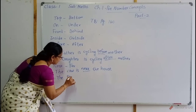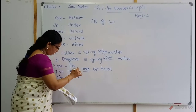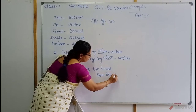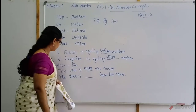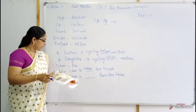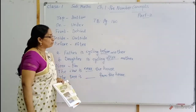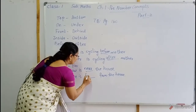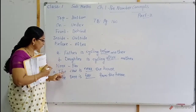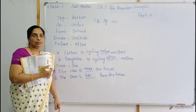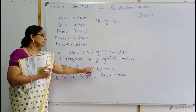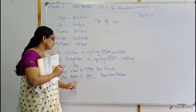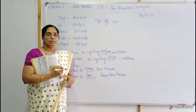Second one: the tree is — dash — from the house. According to the picture, the tree is a little far from the house. Far. Once again, read: the cow is near the house. The tree is far from the house.